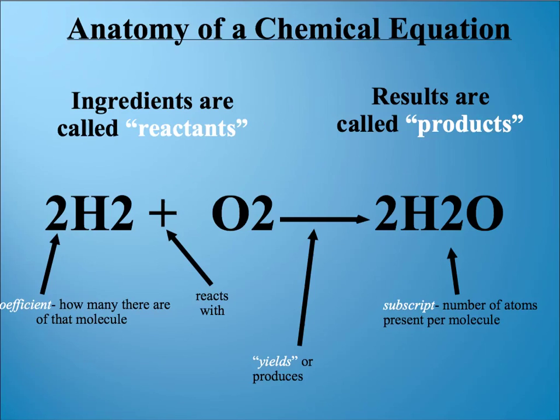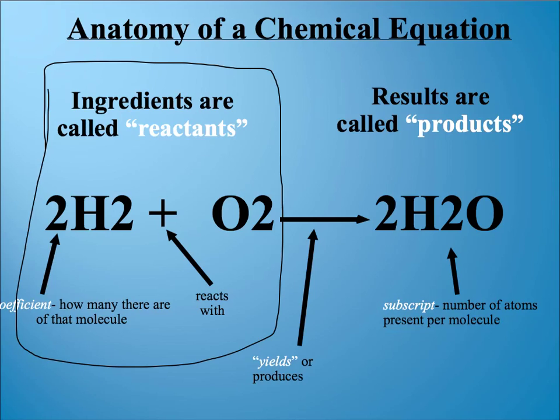So first part is there's ingredients, so ingredients are this side over here before the arrow. And the ingredients, the chemistry word we use for that is reactants. Basically the reactants are what we're starting with before the reaction. On the other side of the arrow we have what we call the products, which are just the results of the reaction, what were made during the reaction.